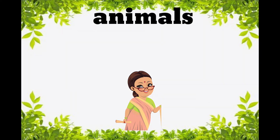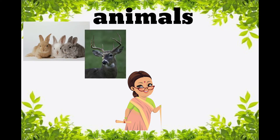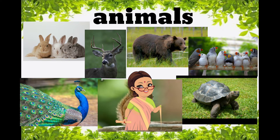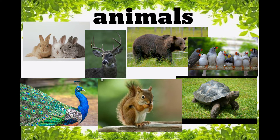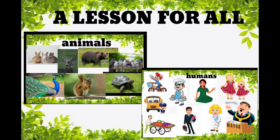In animal characters, there is rabbit, deer, peacock, squirrel, bear, birds and tortoise. So children, we will learn this lesson. Now take your pencil and pen — wherever a difficult word is there, underline that word and I will give the meaning also.